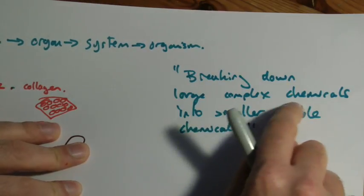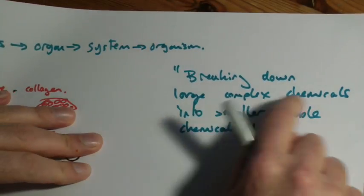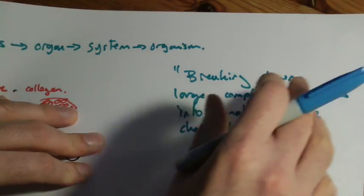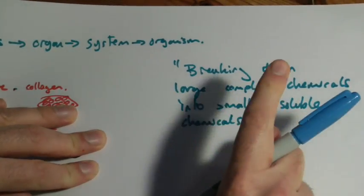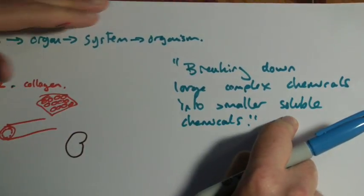One of these large complex chemicals is basically our food. So the carbs, the protein, fats, all that stuff we eat, those are large complex. By complex we mean there's lots of different bits to them. It's a smaller soluble chemical. Soluble means it will dissolve in something.